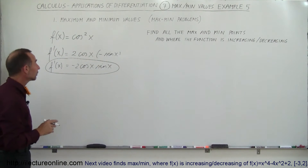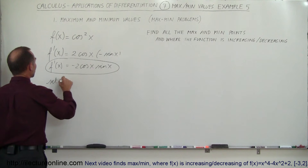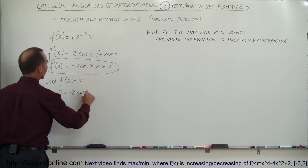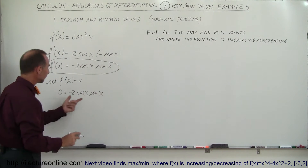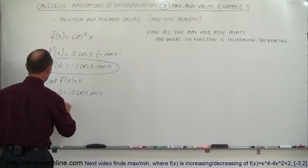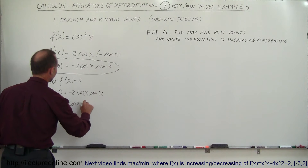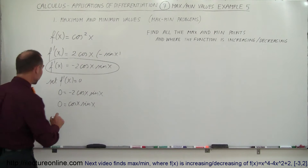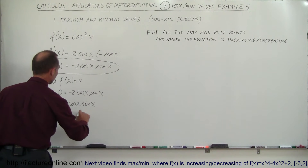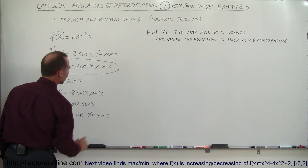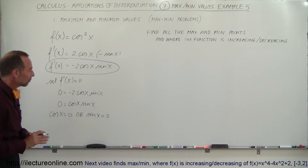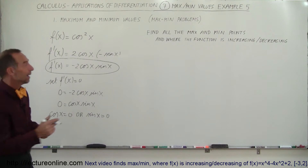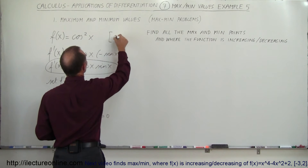Now we set that derivative equal to zero: f prime of x = 0 gives us 0 = minus two times cosine of x times sine of x. Dividing both sides by negative two, we get cosine of x times sine of x = 0. To make this more interesting, let's limit the domain to be between zero and pi.